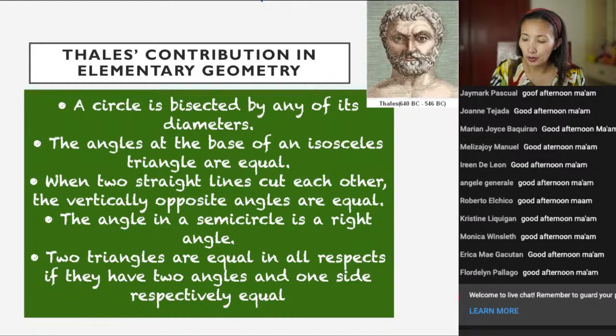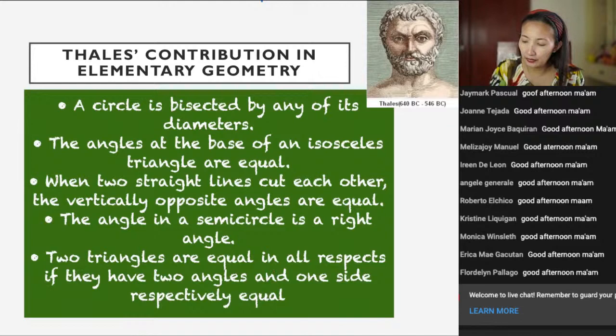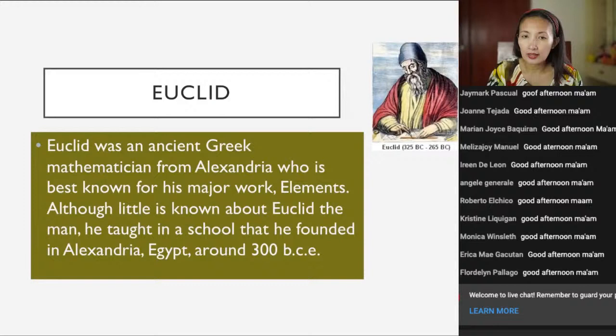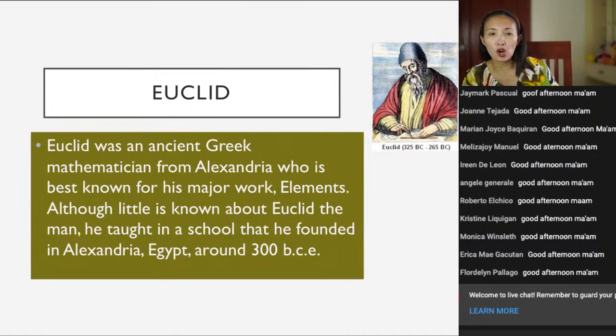Number five: two triangles are equal in all respects if they have two angles and one side equal respectively. This is the ASA congruence. So those are some of the contributions of Thales in elementary geometry.